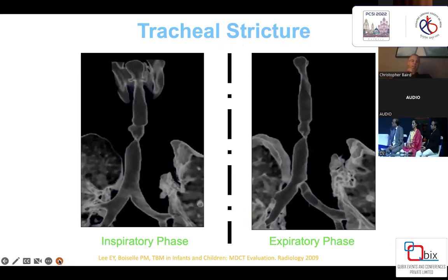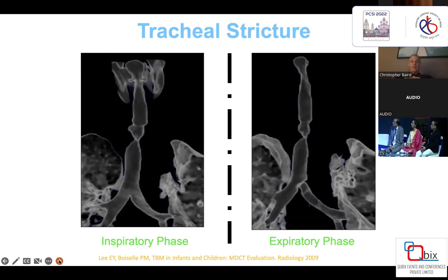This is a CT scan showing tracheal strictures in both the inspiratory and expiratory phases, demonstrating there's really no difference with a dynamic phase when it's a true tracheal stricture.